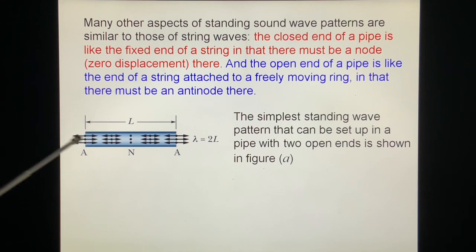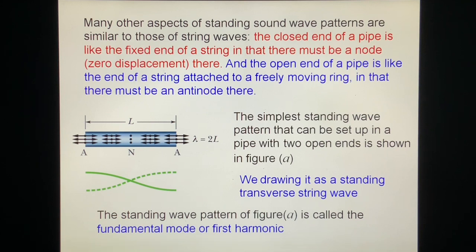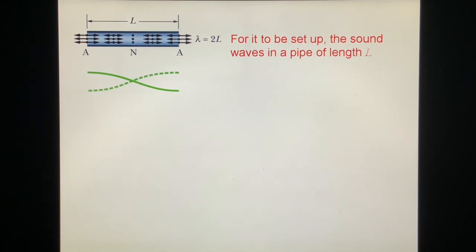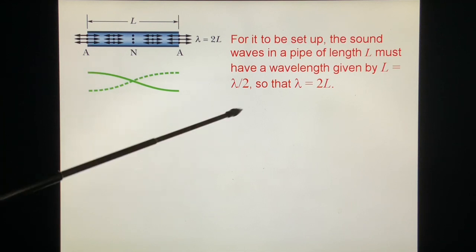The simplest standing wave pattern that can be set up in a pipe with two open ends is shown. On this open end, this is an antinode, maximum displacement, maximum amplitude. And we can describe similar, like a transverse wave, like this one. This is the way we learn from the transverse wave. This is the maximum amplitude. This is a node, this is an antinode, this is an antinode. The standing wave pattern is called fundamental mode or first harmonic. For it to be set up, the sound wave in a pipe of length L must have a wavelength given by L equal to half wavelength. So the lambda must be equal to two L. It's a fundamental.